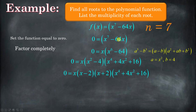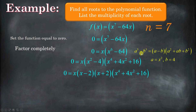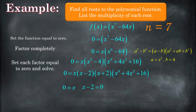If you factor x to the 6th minus 64 as a difference of cubes, we get x squared minus 4 times x to the 4th plus 4x squared plus 16. If you're ever in trouble with factoring the sum or difference of cubes, I'll leave a link in the description. A cube minus another cube can be factored using that formula. Then x squared minus 4 is a difference of squares, giving us x plus 2 times x minus 2. Now we take each of those factors, set them equal to 0, and solve.